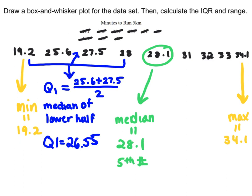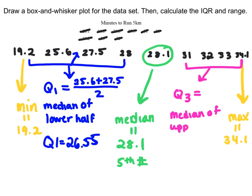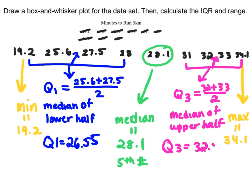For the upper half, we do the same thing, excluding the median. Q3 is the median of the upper half, which falls between 32 and 33. So it's 32 plus 33 divided by 2, giving us Q3 equals 32.5.